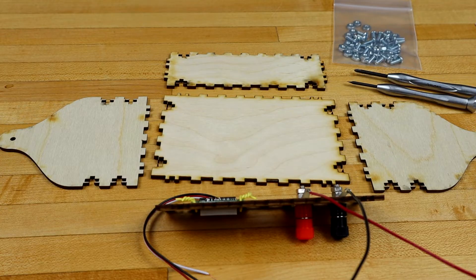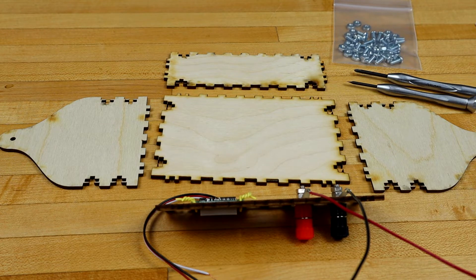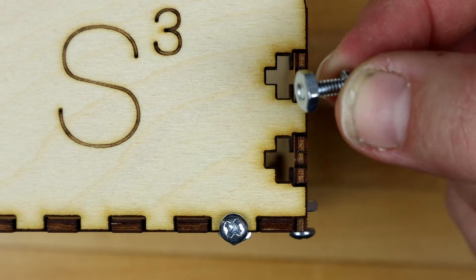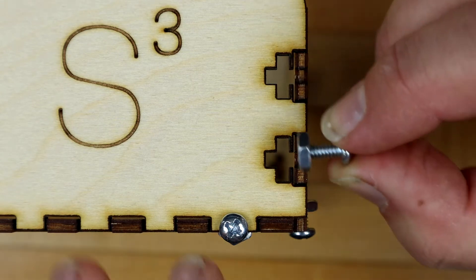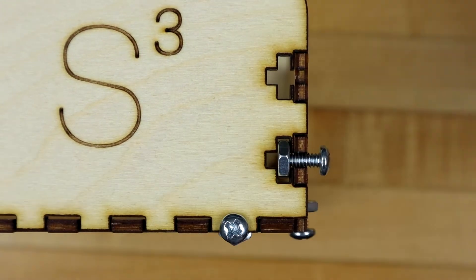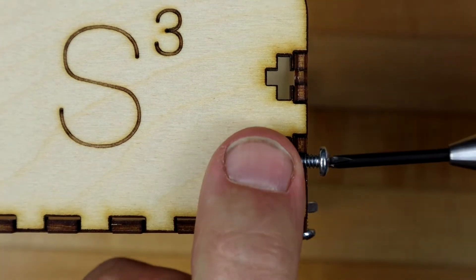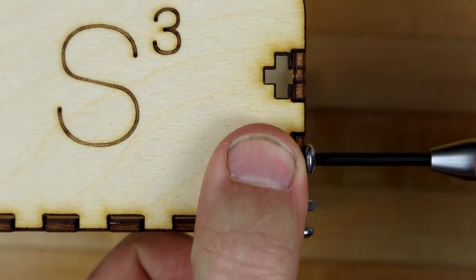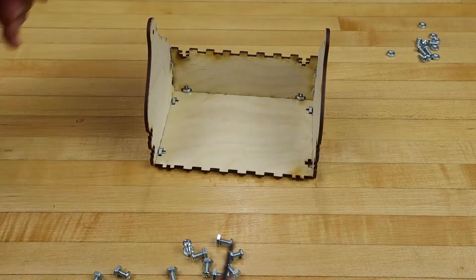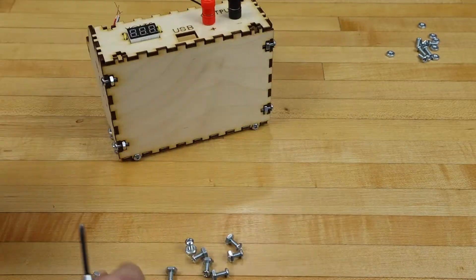Using the screws, assemble the main body of the project: the base, front, back, and sides. Place a nut on the screw, snap it into the slot provided, and snug down the screw. Repeat this for all the connections.